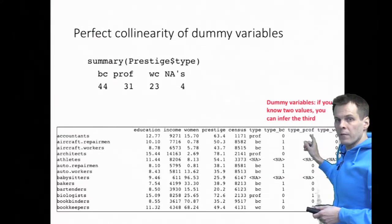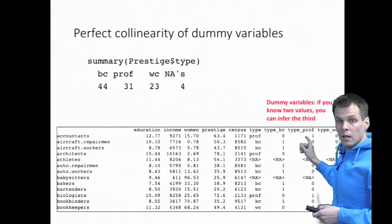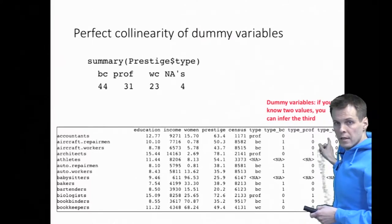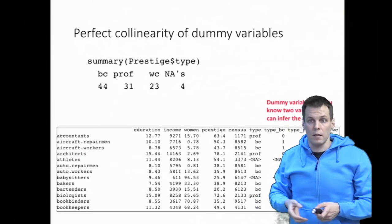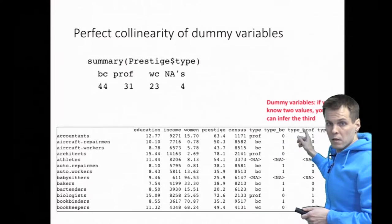On the other hand, if type blue collar or type professional, either one of them is one, then type white collar must be zero. So type white collar doesn't give us any new information if we know the type blue collar and type professional.